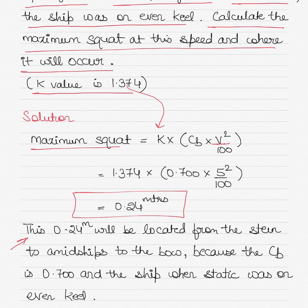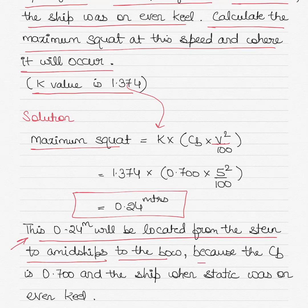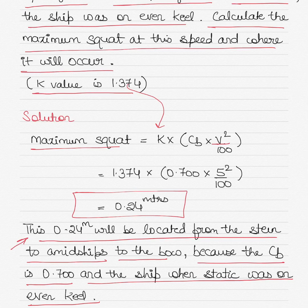However this time this 0.24 meters will be located from the stern to midships to the bow, from the stern towards the midships towards the bow, because the block coefficient is exactly 0.700 and the ship when static was on even keel. So the 0.24 meters of squat will be located from the stern towards the midships going towards the bow.